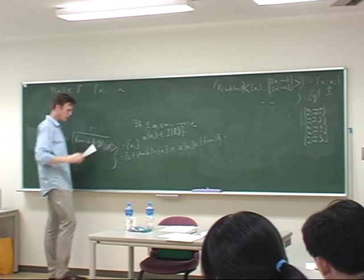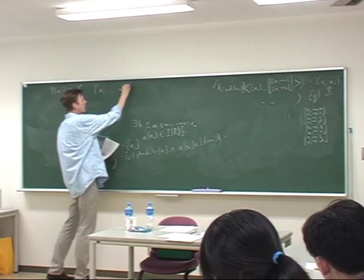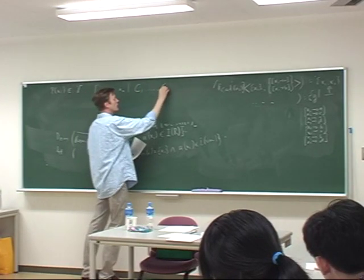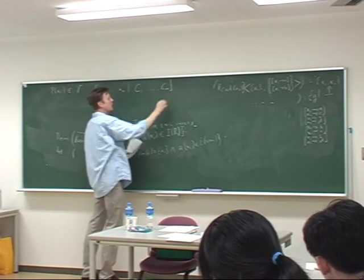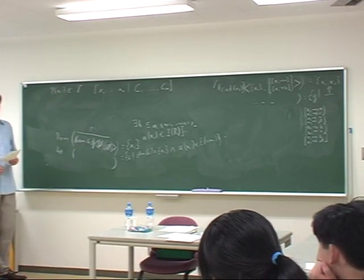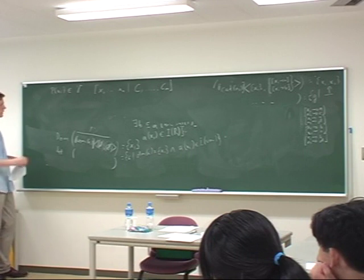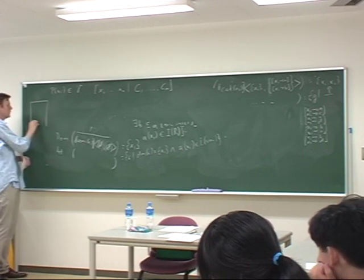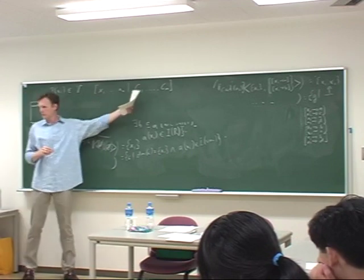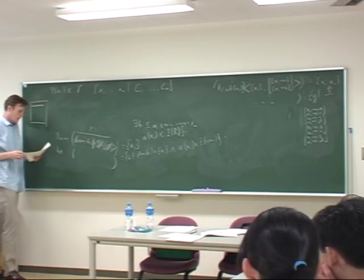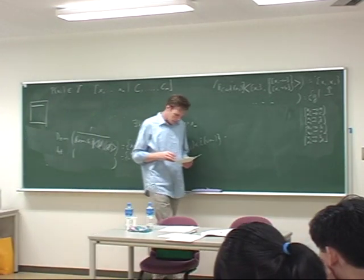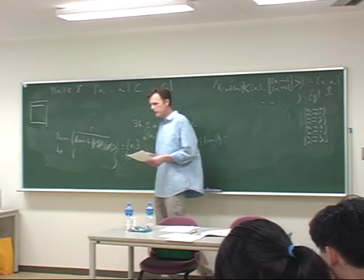Now comes something interesting. If we have a list of conditions c1 through cm, then a structure which has some list of discourse referents — doesn't have to be as many as there are conditions — and then we have these conditions below the line, this sort of thing is a box. It's the same thing we saw earlier: stuff above the line and stuff below the line.